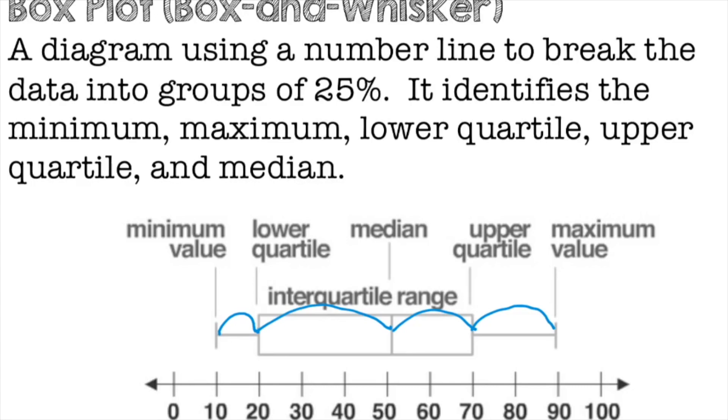You break it into fourths of 25%. So it identifies the minimum, the maximum, the lower quartile, the upper quartile, and the median. Box plots are a great resource to identify a few things.